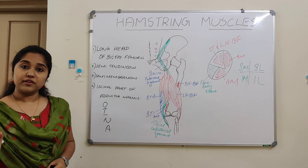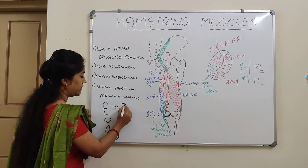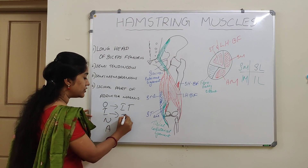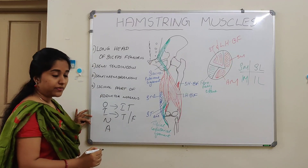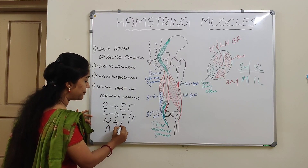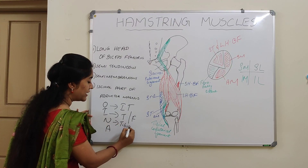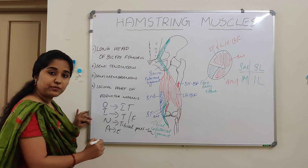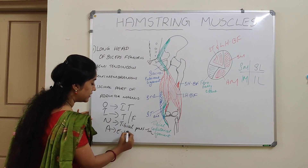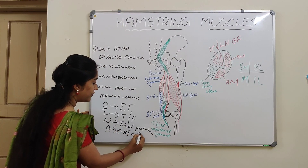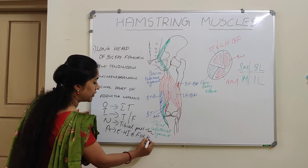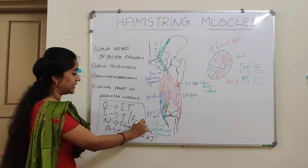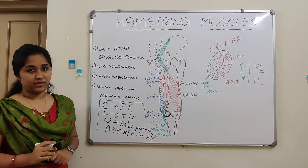The origin should be from the ischial tuberosity. The insertion should be to either the tibia or the fibula. The nerve supply should be by the tibial part of the sciatic nerve. And the action should be extension of the hip joint and flexion of the knee joint. Only if a muscle fulfills all four criteria can it be called a hamstring muscle.